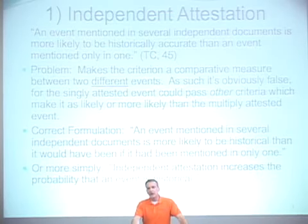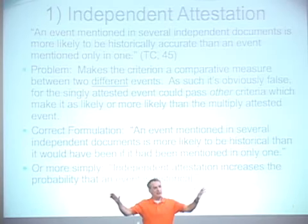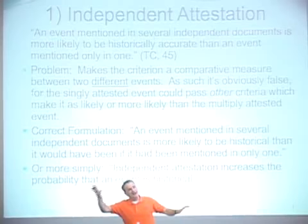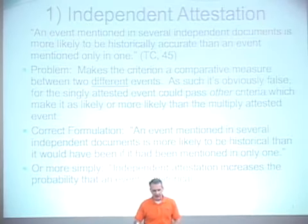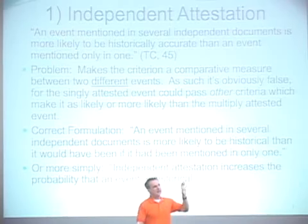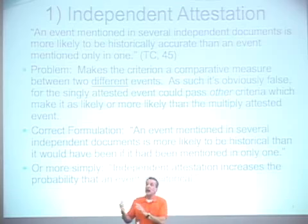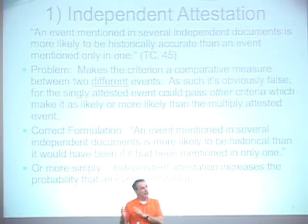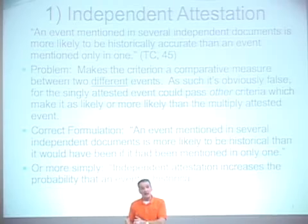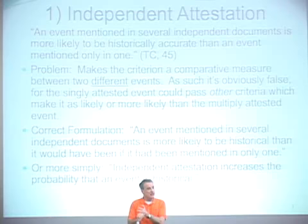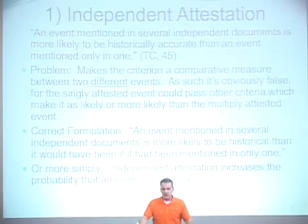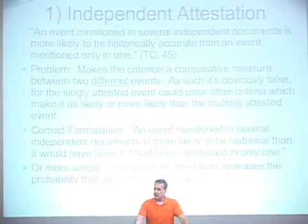What's the problem with this formulation? Notice that it makes the criterion a comparative measure between two different events — an event mentioned in several independent documents versus some other event mentioned in only one. As such, by making it a comparison between two different events, it's obviously false, because the singly attested event could pass other criteria which make it as likely or even more likely than the multiply attested event. The event found in only one source might pass the criterion of embarrassment or dissimilarity and be highly historically probable. So Ehrman has simply misformulated the criterion of independent attestation.